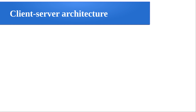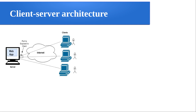Looking at client-server architecture: there will be a server that is remotely connected and the clients will communicate to the server through the internet. In this example, port number 80 is shown — it may be running a web application. All the clients will be connected to that particular port and they will try to get the service.